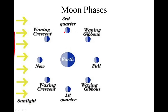The moon is going counterclockwise. The light blue part is the side that's lit up by the sun. The sun's over here, so you can see half of the moon is always lit up by the sun. However, we are not always going to see that half of the moon.